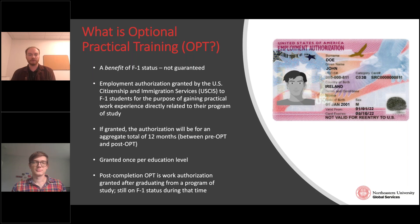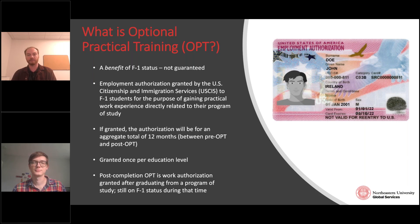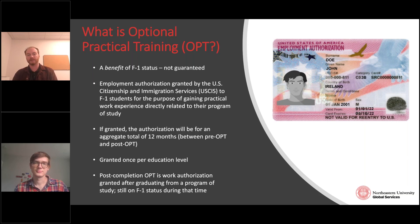If granted, the authorization gives you 12 months of post-completion OPT. If you completed any practical training during your degree program, such as pre-OPT, the time spent will deduct from that 12 months. This 12-month benefit is once per education level — bachelor's, master's, and PhD each get their own 12 months. Post-OPT is only granted after you complete graduation, so if you need to extend your program, you must wait for your actual graduation date to become eligible.